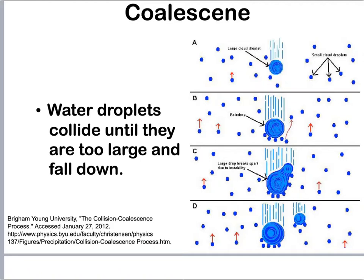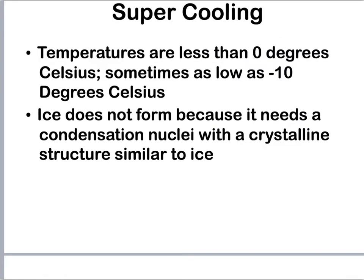This is similar to hail — the stronger the updrafts, the larger the raindrops will be. If there is no condensation nucleus, the water will not condense. You can get water droplets well below freezing temperatures that are still in liquid form. This can be a problem for airplanes flying through these supercooled droplets, because the airplane acts as a condensation nucleus and the water droplets can freeze on it.